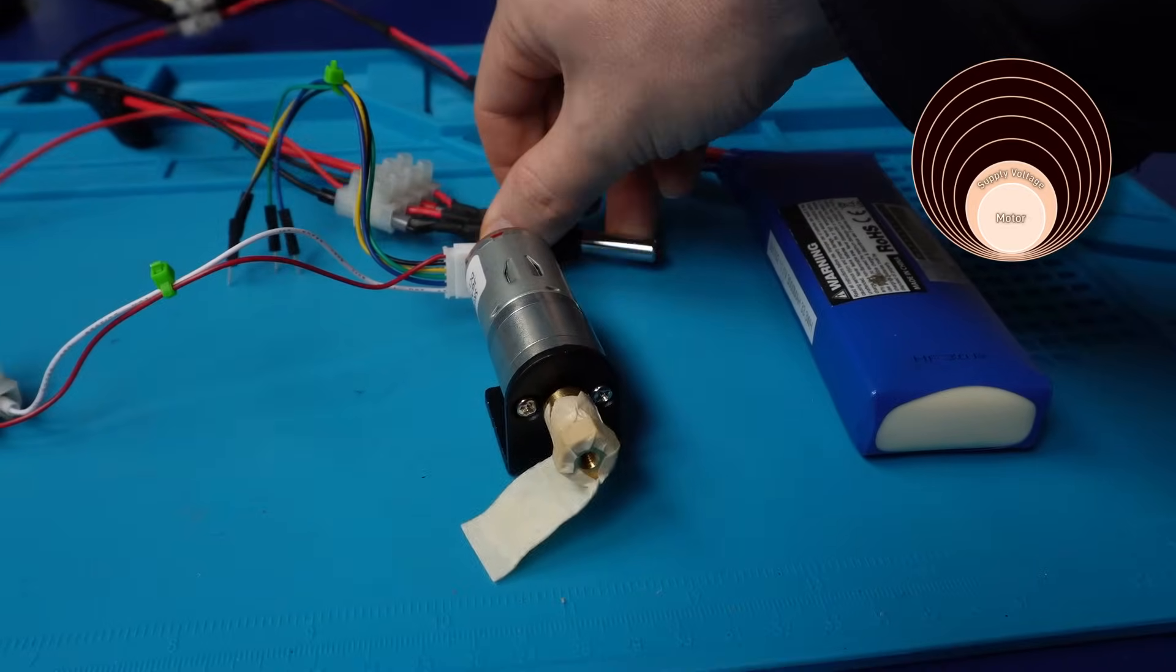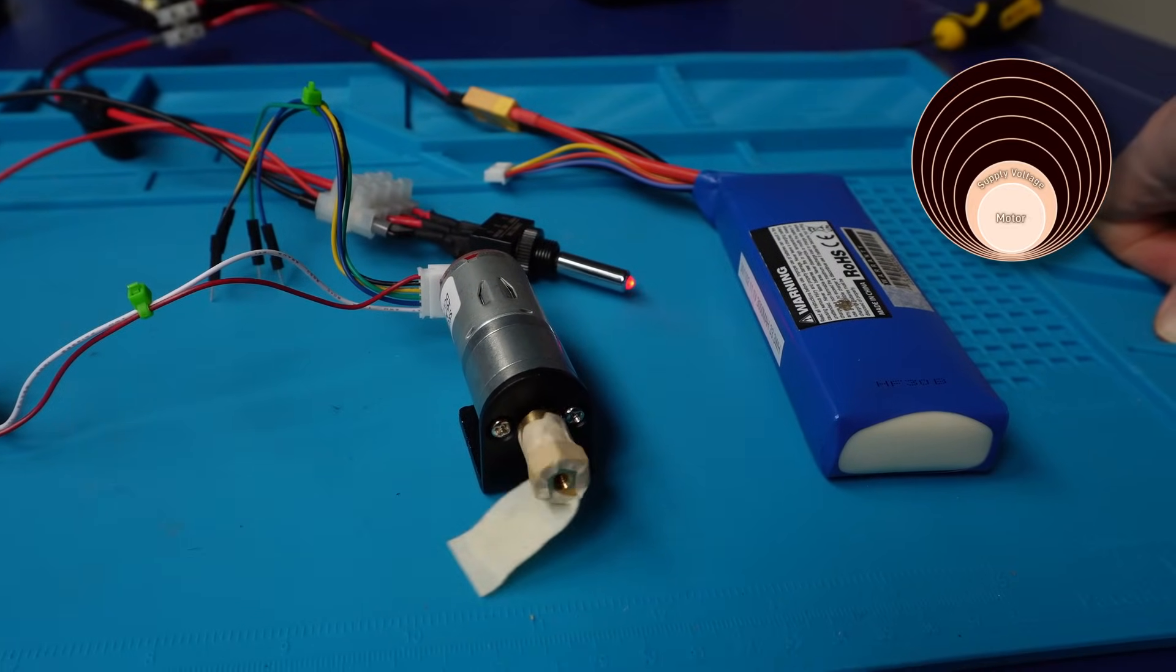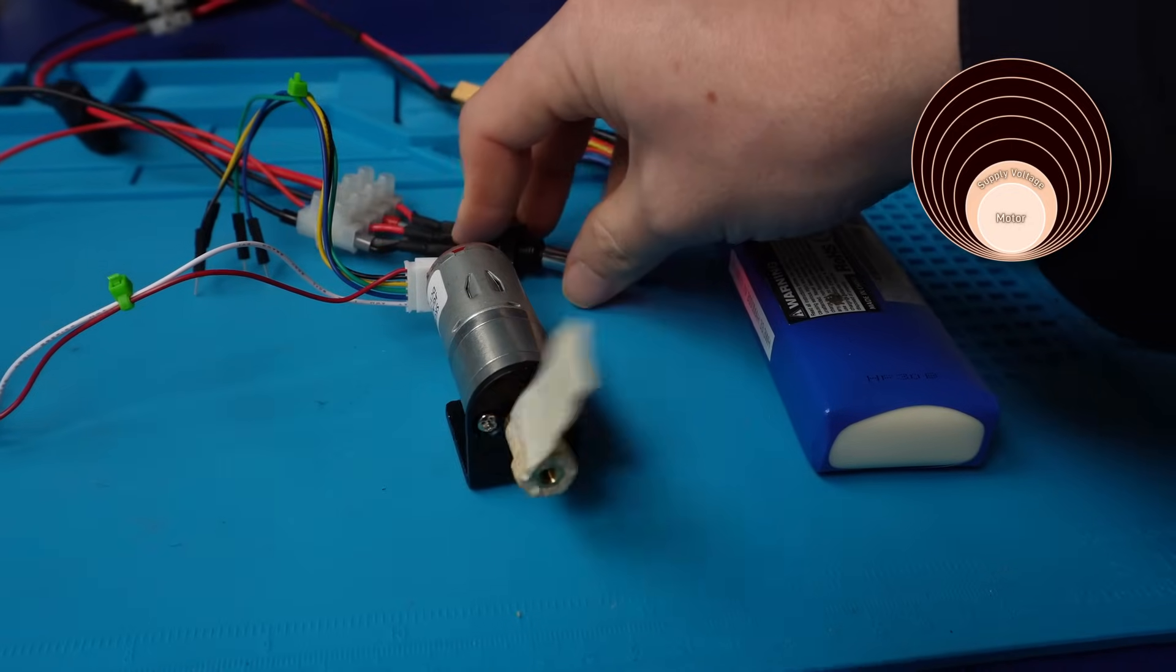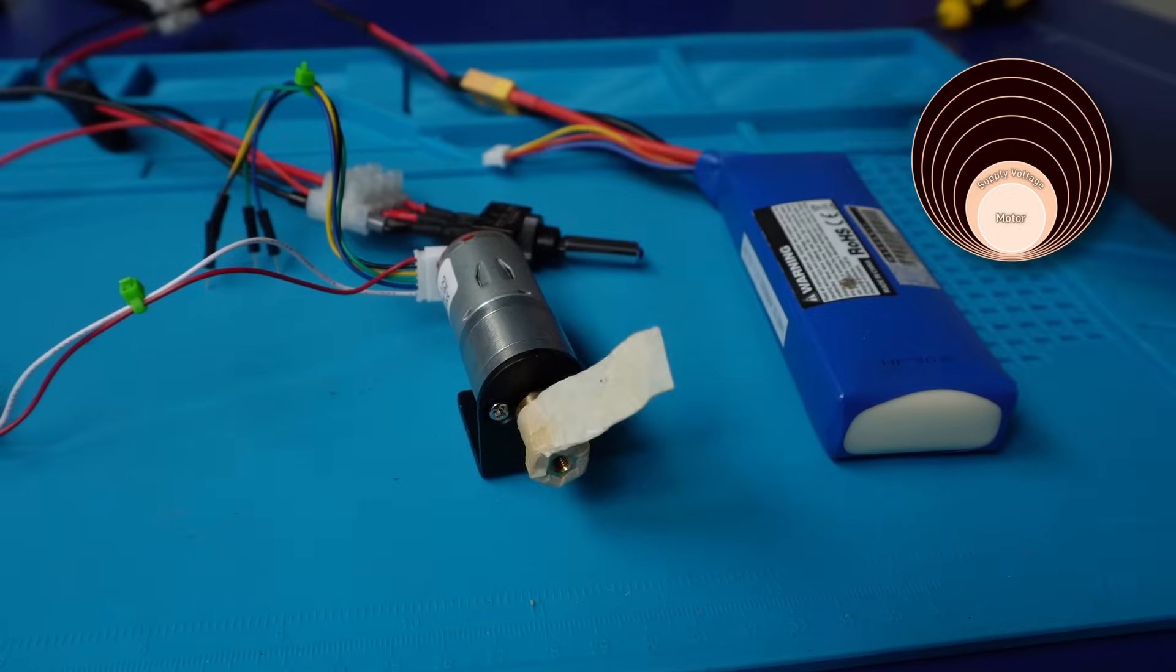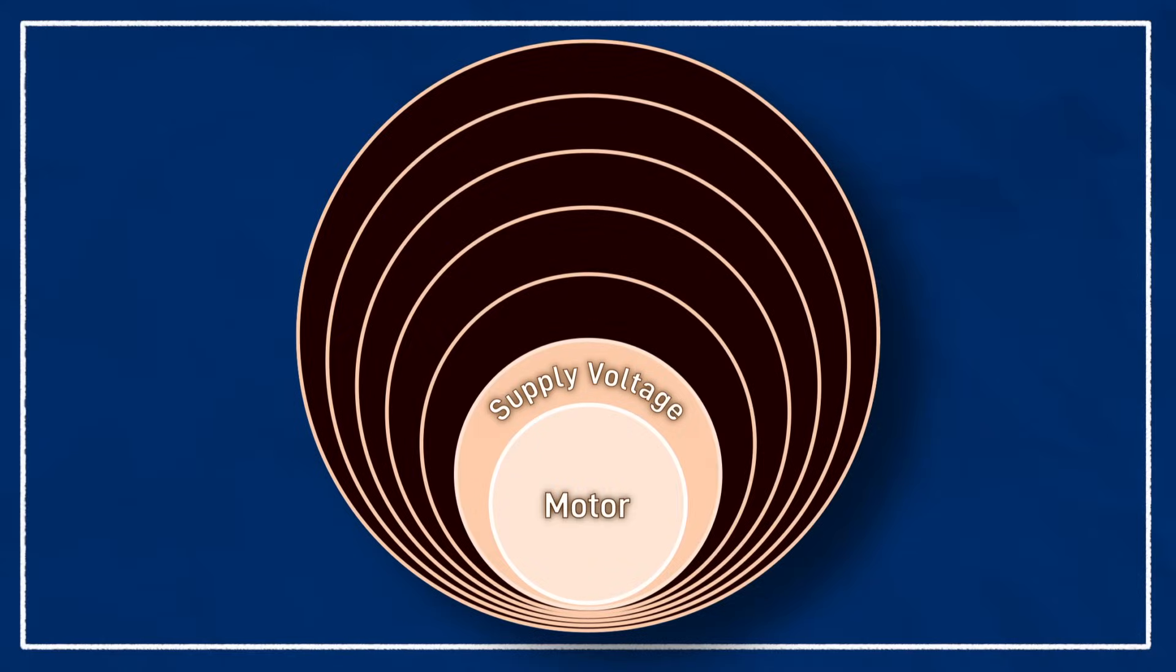Here I've got a 12V DC gear motor connected to a 12V battery with a switch, and sure enough, when I turn it on, the motor spins. That's all very well, but we've got no way to change the speed or direction and no way to control it remotely. So the next layer that we're going to add is a motor driver.